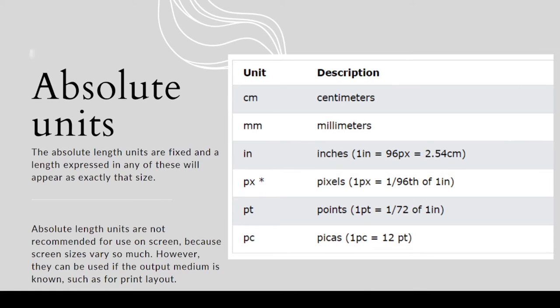What are absolute units? The absolute lengths are fixed, and a length expressed in any of these will appear as exactly that size. If you put one centimeter to a division, it will give one centimeter length.